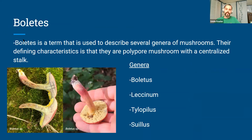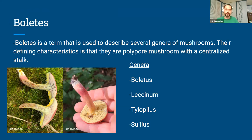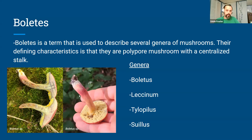I want to go into boletes briefly, though I'm a complete novice on this and I'm just now becoming comfortable with identifying them. 'Boletes' is a term used to describe several genera of mushrooms. The defining characteristic is that they are polypore mushrooms with a central stock. Relevant genera include Boletus, Leccinum, and Tylopilus. I found one specimen and noted it was likely not the Boletus genus, but I did a cross-section and noticed it was black-staining when scored and bruised.